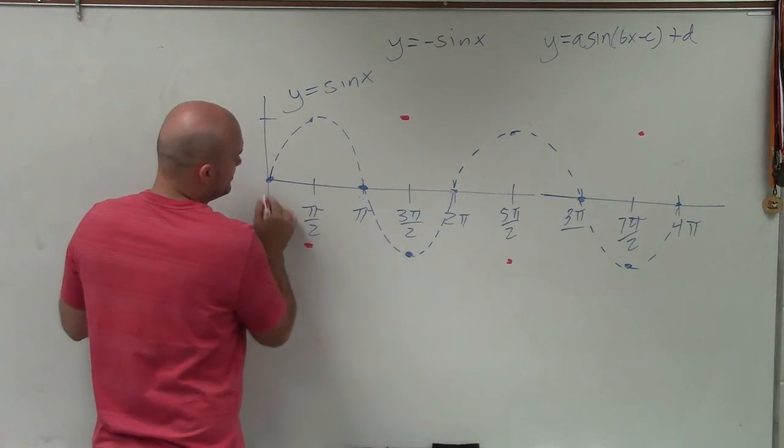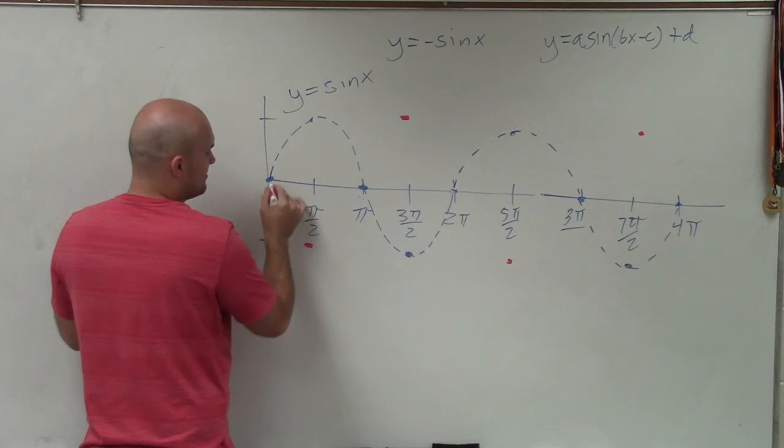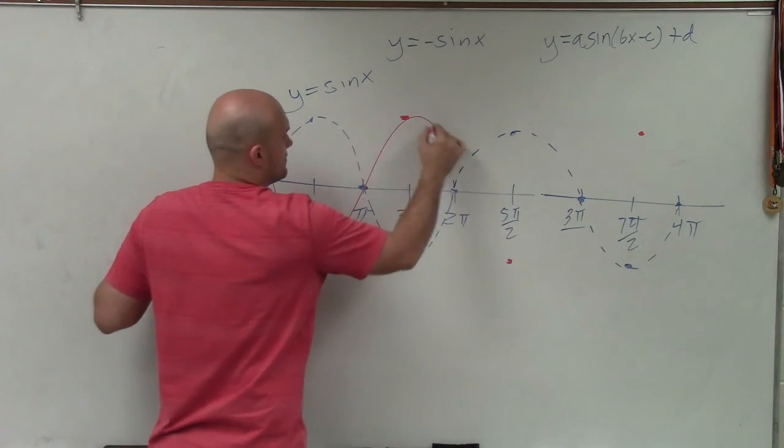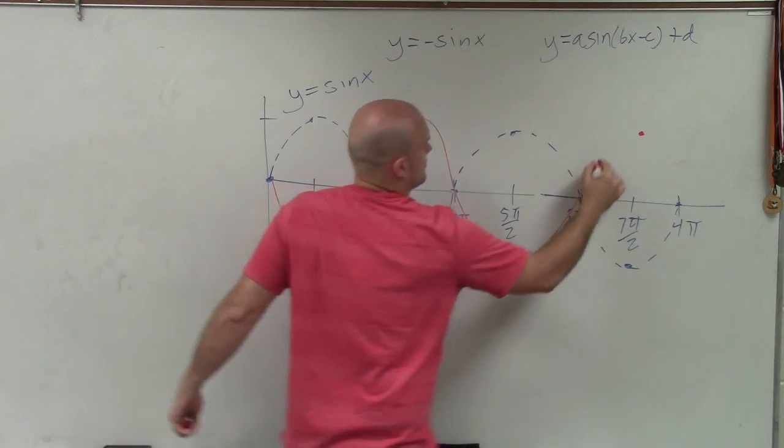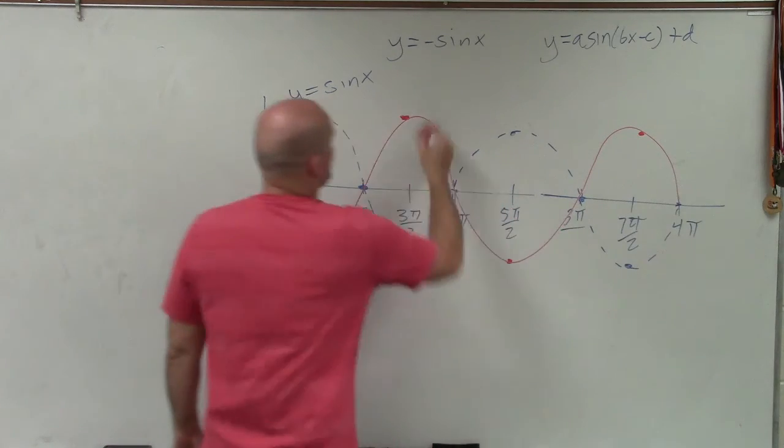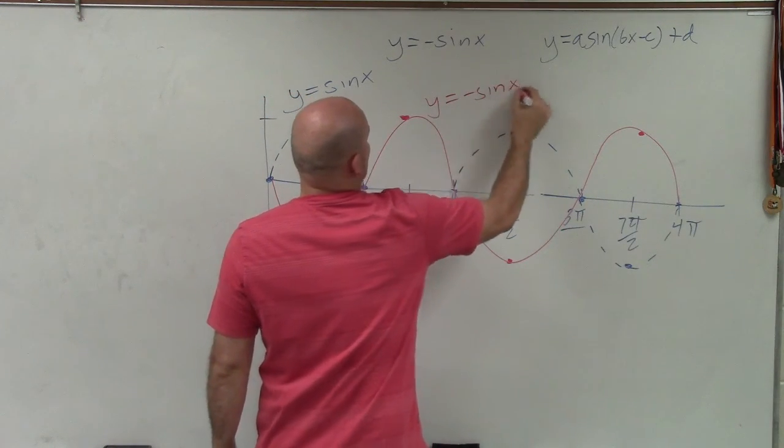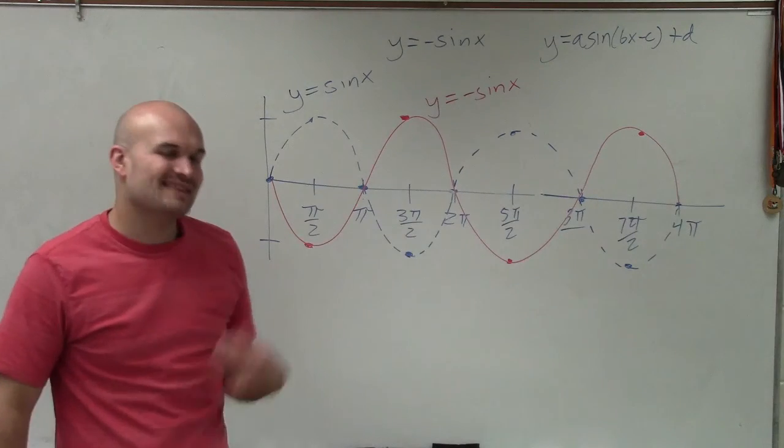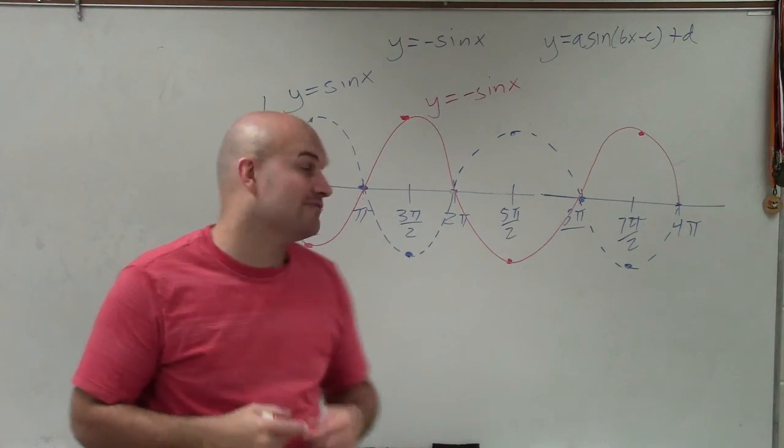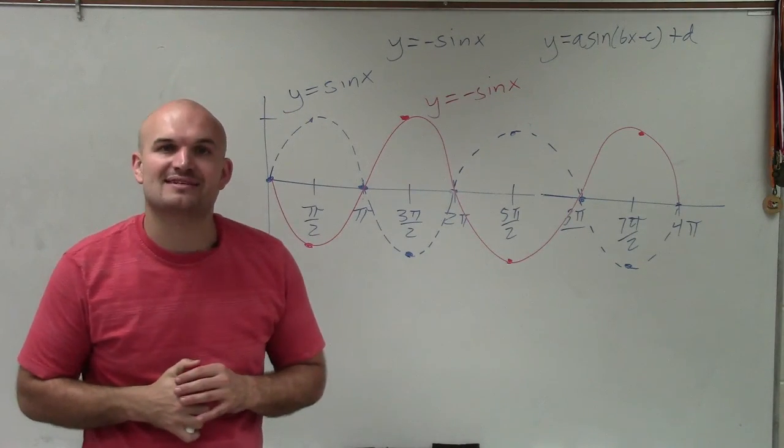So now I'm just going to use the same points that are on the axis, but now connect. There you go. So that is y equals negative sine of x. So there you go, ladies and gentlemen. That is how you use the parent graph to graph y equals negative sine of x. Thanks.